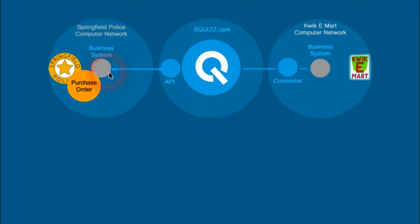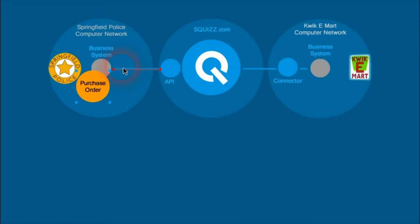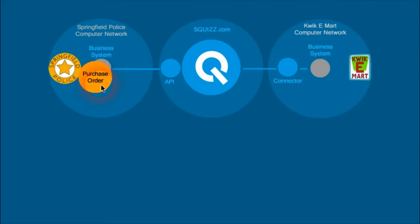If that was the case, then that business system would have a direct connection with the API in order to push that purchase order across. Software has to be developed within Springfield Police's computer network or within the software they use to store their purchase orders, in order to push the purchase orders through to Squiz.com and on to the supplier. The good news is that this link uses standards — a consistent way to push purchase orders through — and it can then be leveraged on several suppliers at the other end. Springfield Police doesn't need to worry about how to get data into the supplier's computer system; they just have to worry about using the API to get data in.